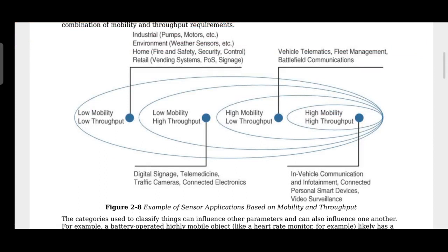Sensor applications can be classified based on mobility and throughput, as shown in a diagram. High mobility and high throughput covers areas like in-vehicle communication, infotainment, connected personal smart devices, and video surveillance.